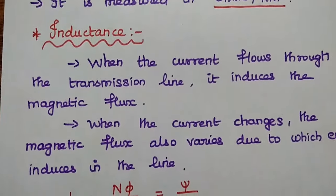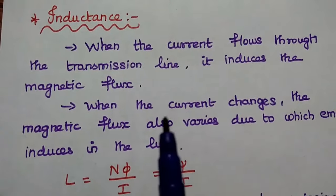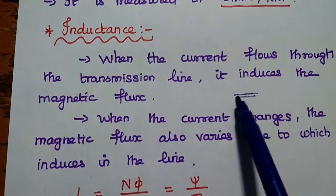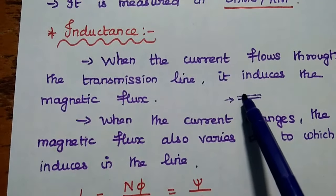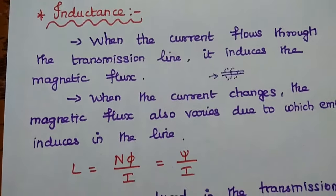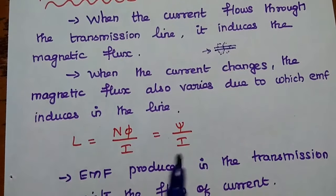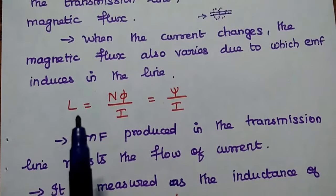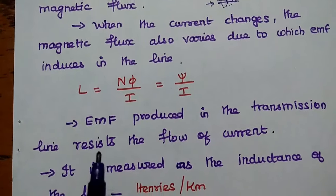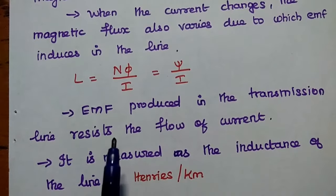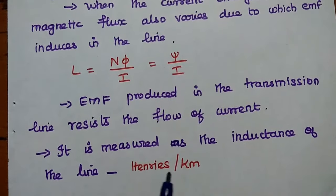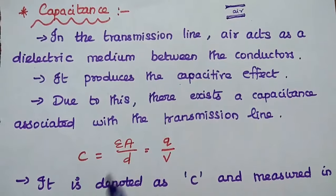The next parameter is inductance. When current flows through the transmission line, it induces a magnetic flux. Consider the conductor — if current passes through it, there is some magnetic flux around the conductor. When the current changes, the magnetic flux also varies, due to which an electromagnetic force is induced in the line. Here, inductance is denoted as L, where L equals N-phi by I, and phi represents flux. The EMF produced in the transmission line resists or opposes the flow of current, and this is measured as the inductance of the line. Its unit is Henrys per kilometer.